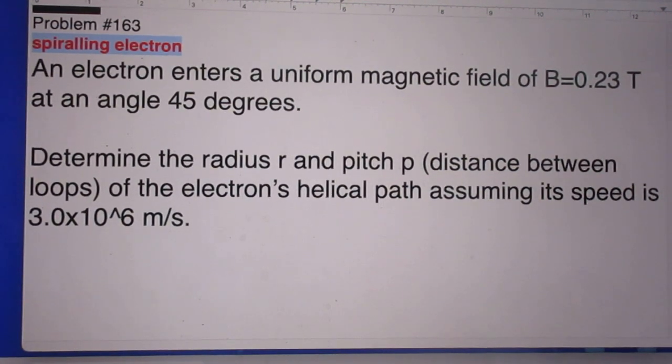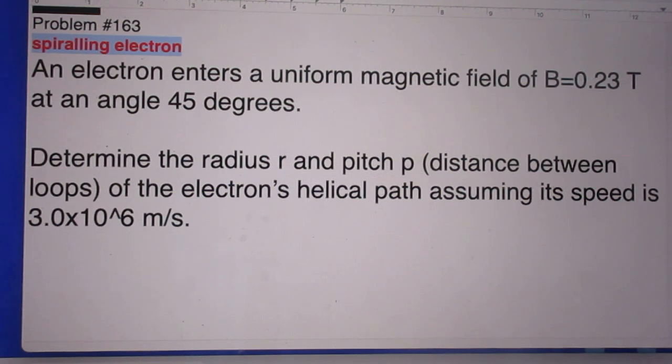Problem 163: Spiraling Electron. An electron enters a uniform magnetic field of B=0.23 Tesla at an angle of 45 degrees. Determine the radius r and pitch p of the electron's helical path, assuming its speed is 3.0×10^6 m/s.